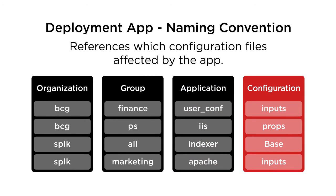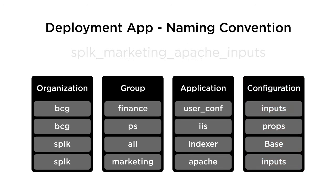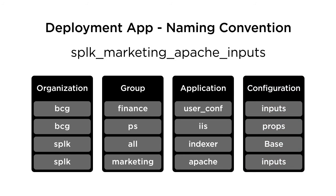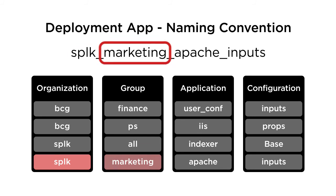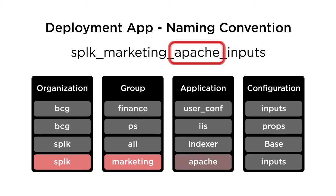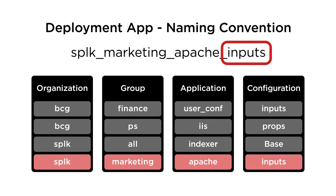Finally, the fourth key is used to reference which configuration files are affected by the app. In this example, we have an app created by Splunk for the marketing group that uses Apache server data and affects the inputs configuration.